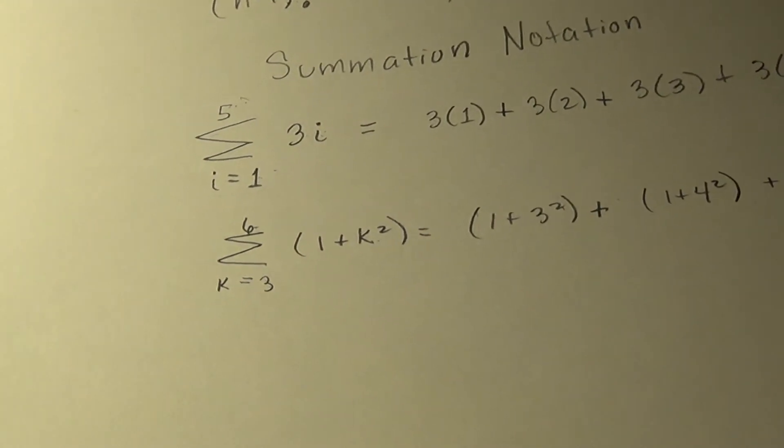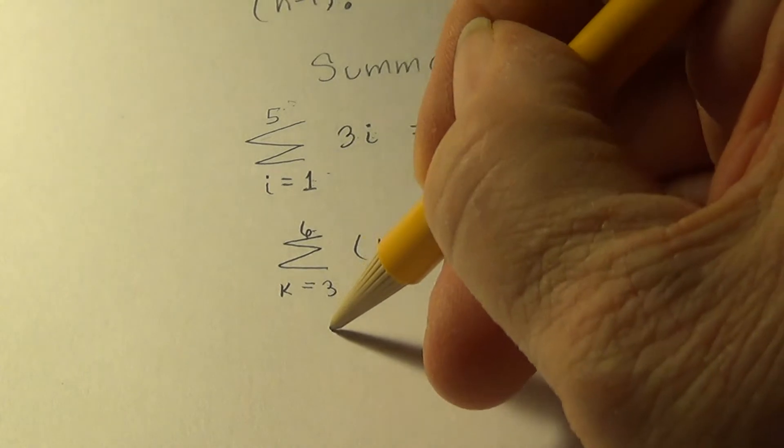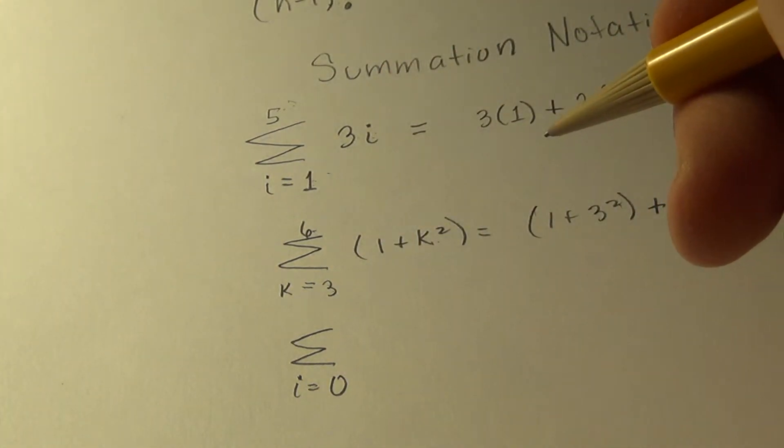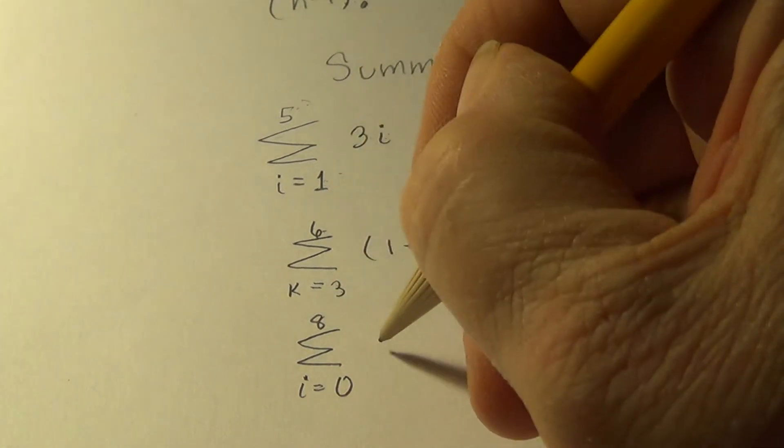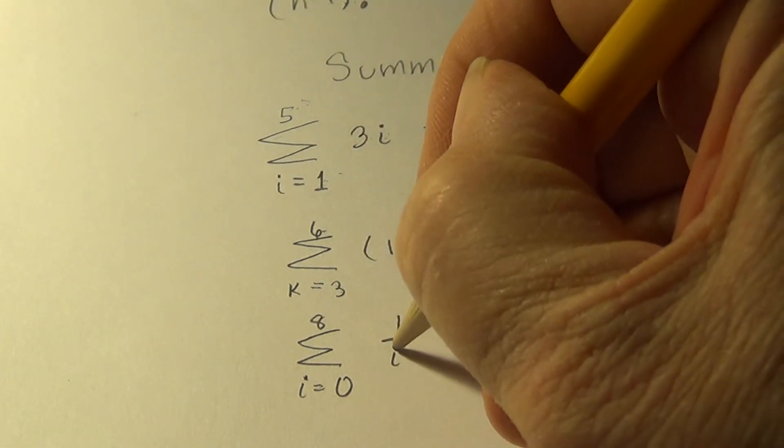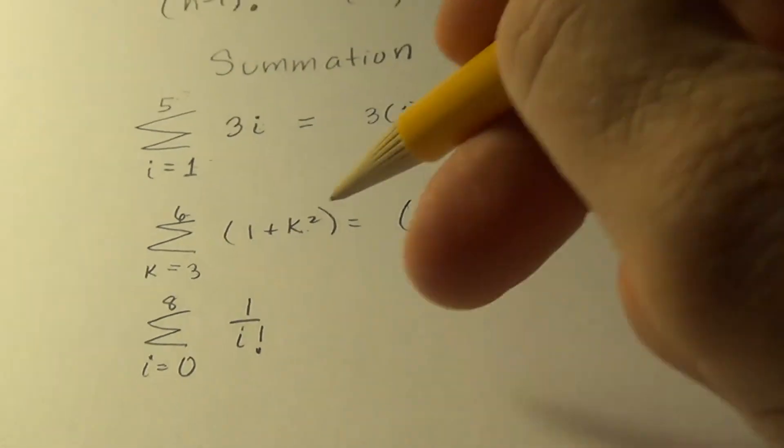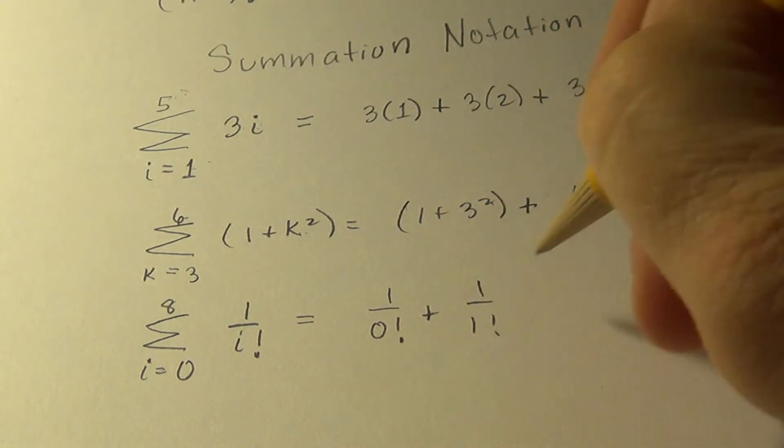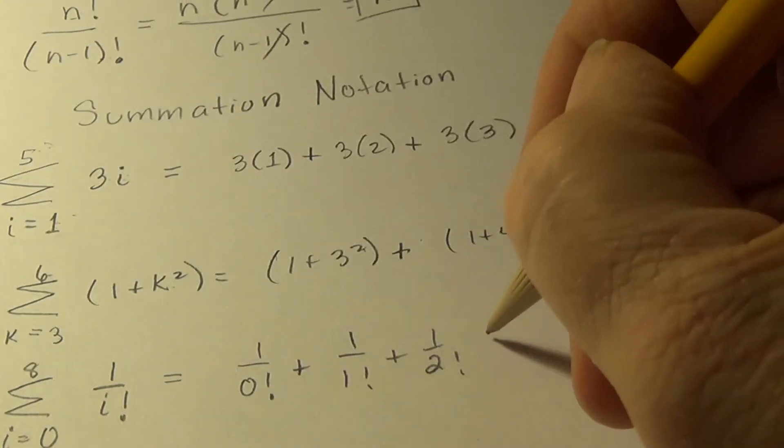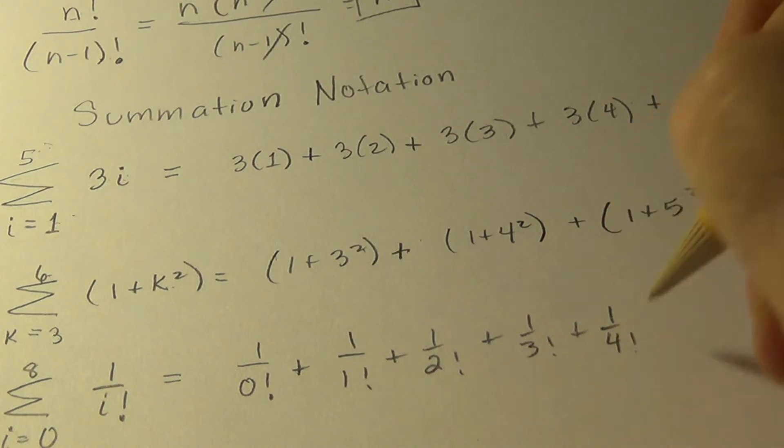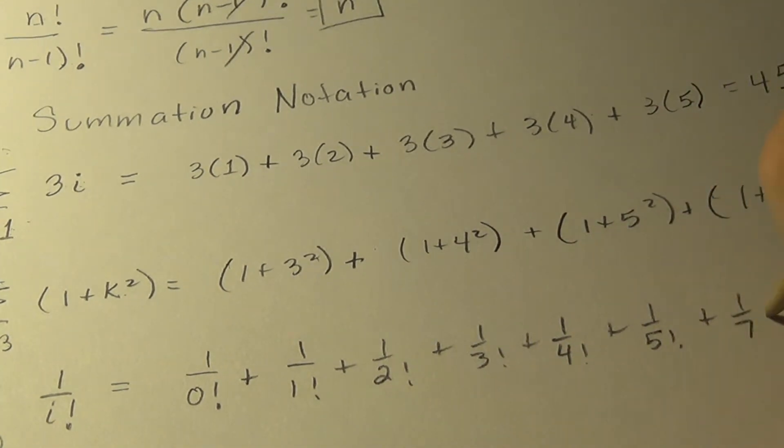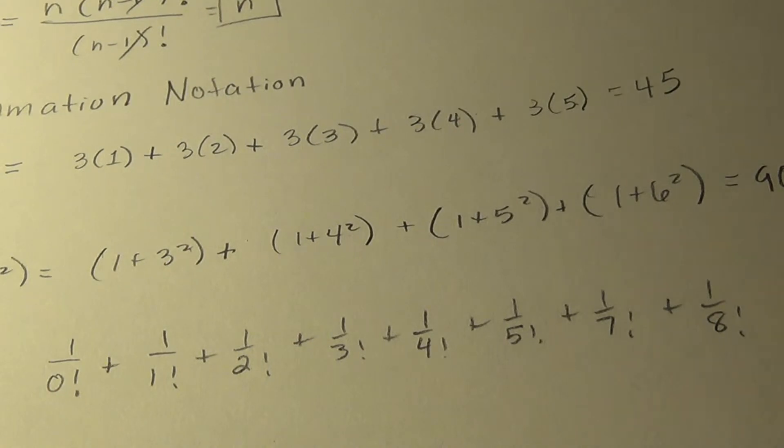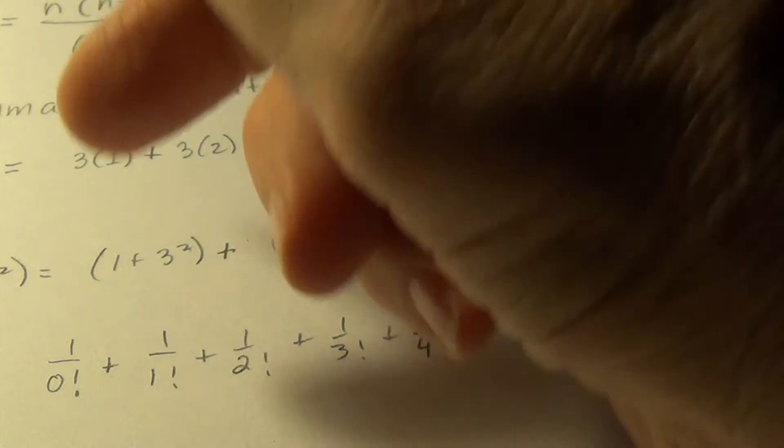Let's look at one that has factorials in our summation. We'll start out with the index is i this time. It's going to go from 0 to 8. And the typical element is 1 over i factorial. So how cool is that? So we start out with a 0 plus, plus, plus... I think this one's going to be fractional. You recall from our previous lesson, 0 factorial is 1.